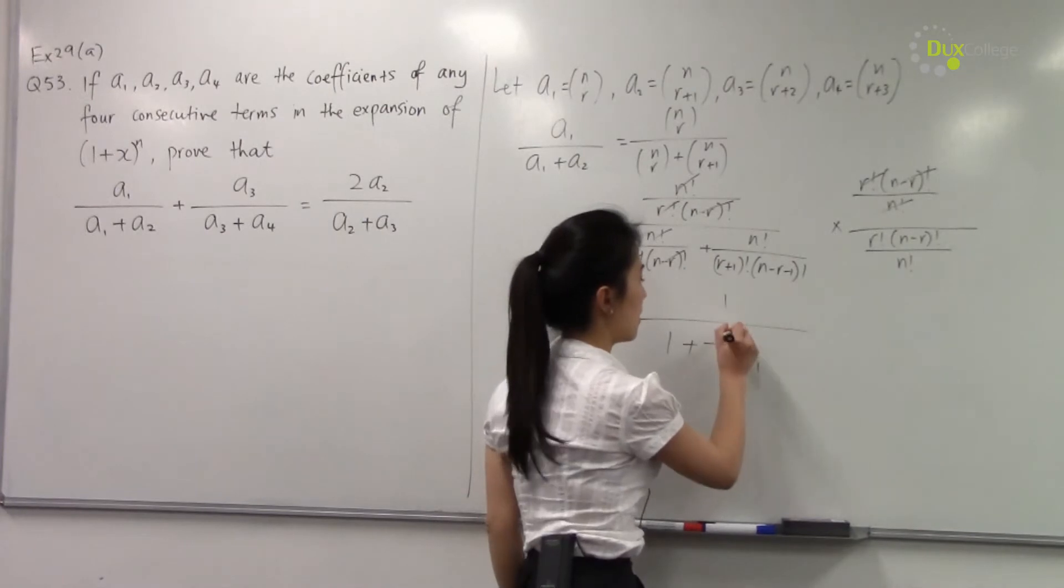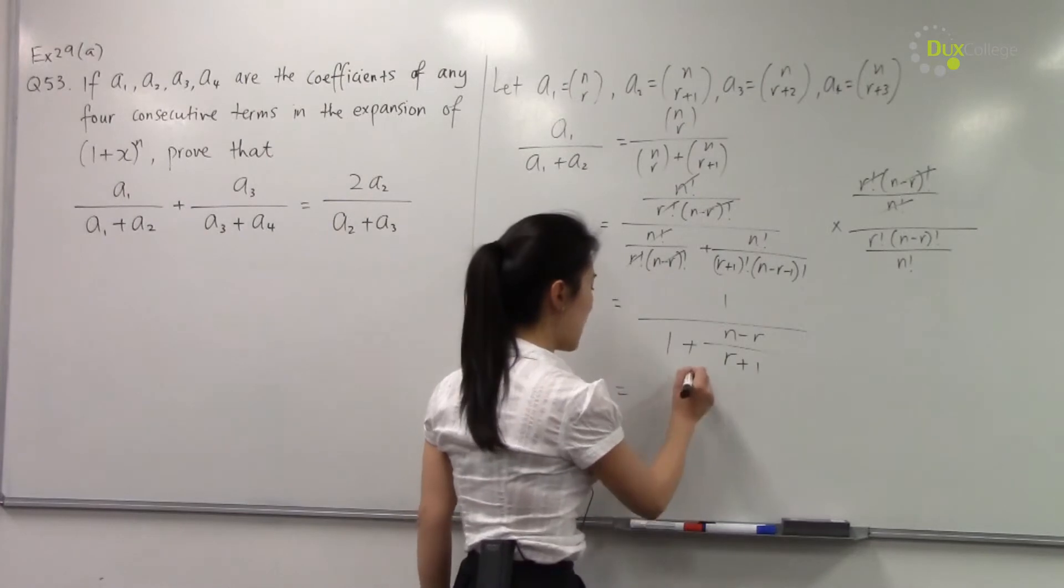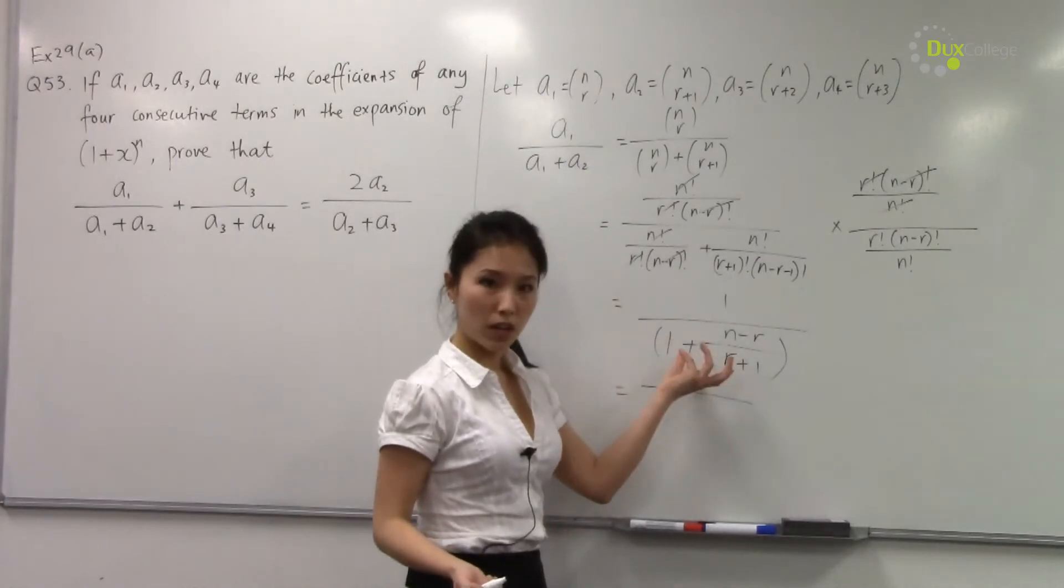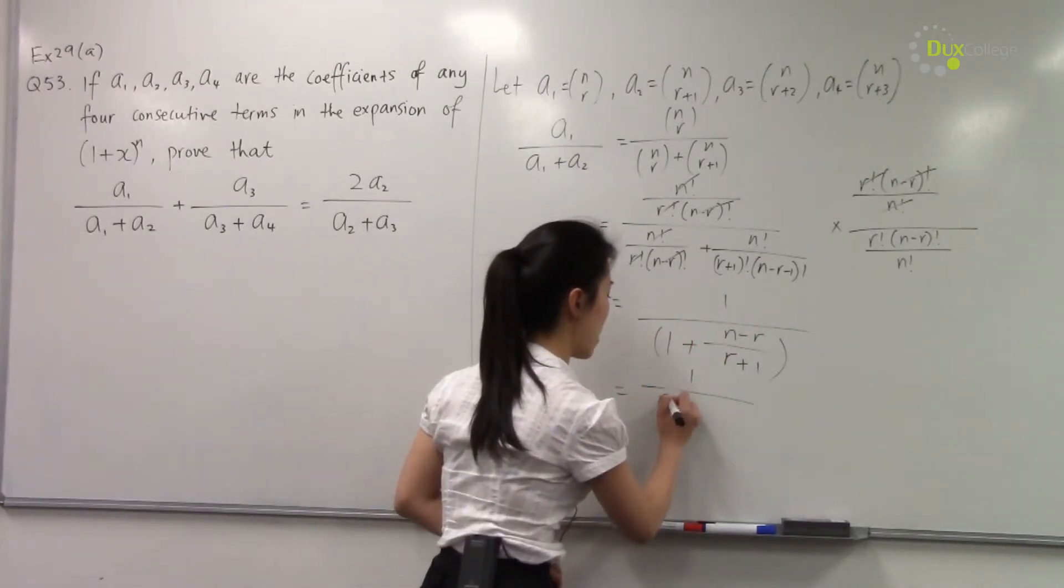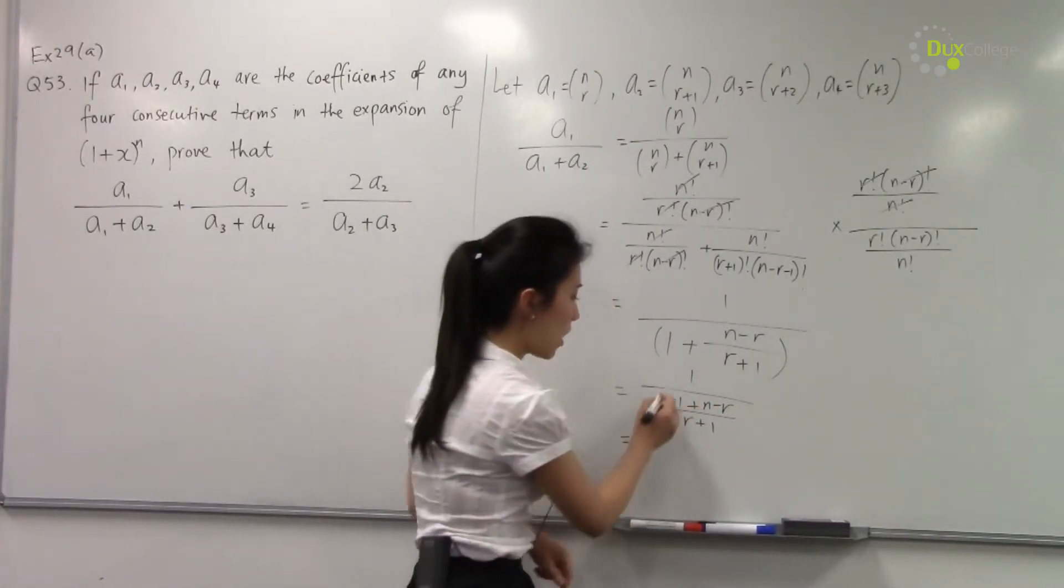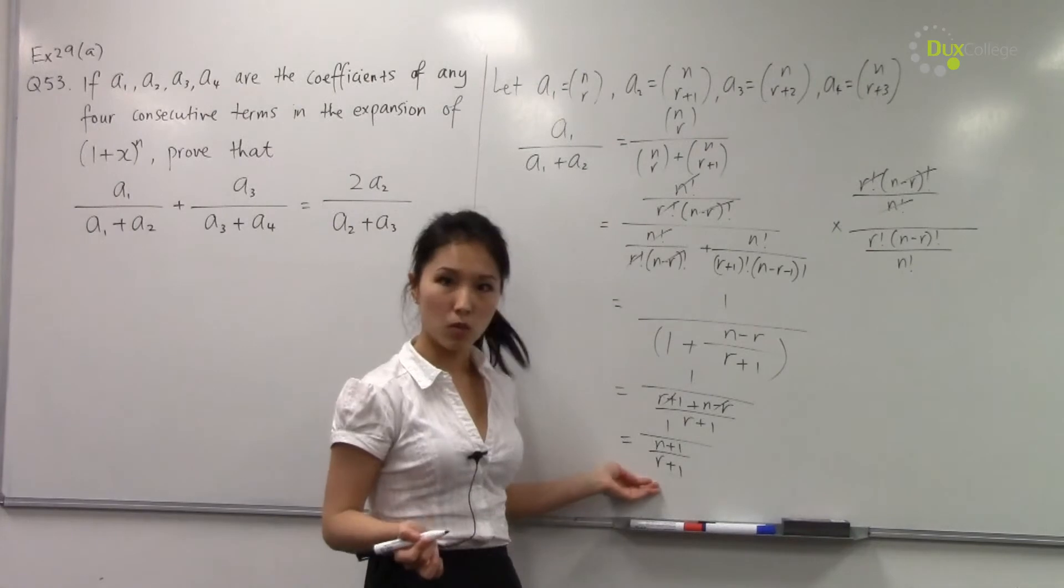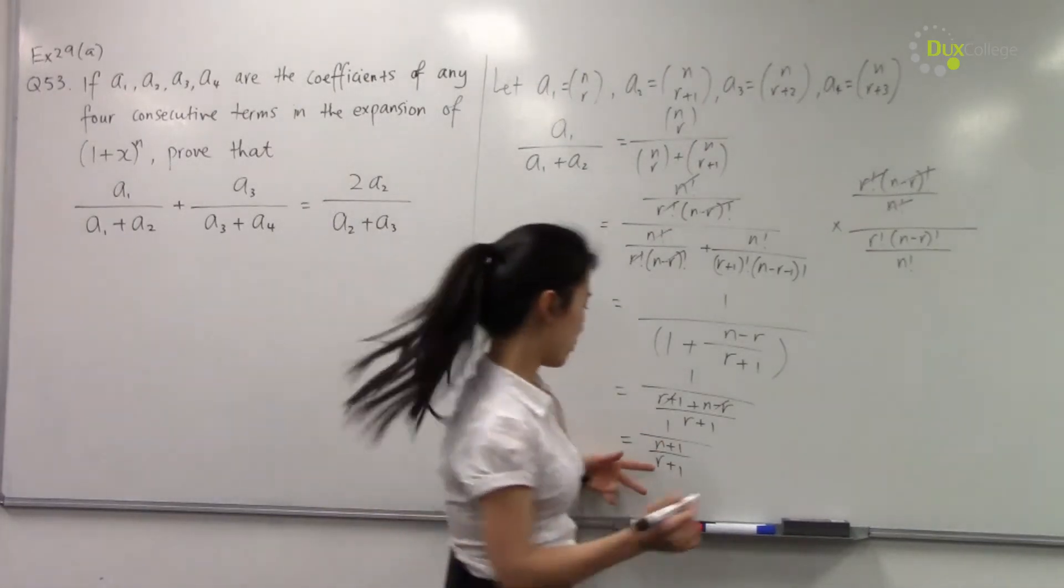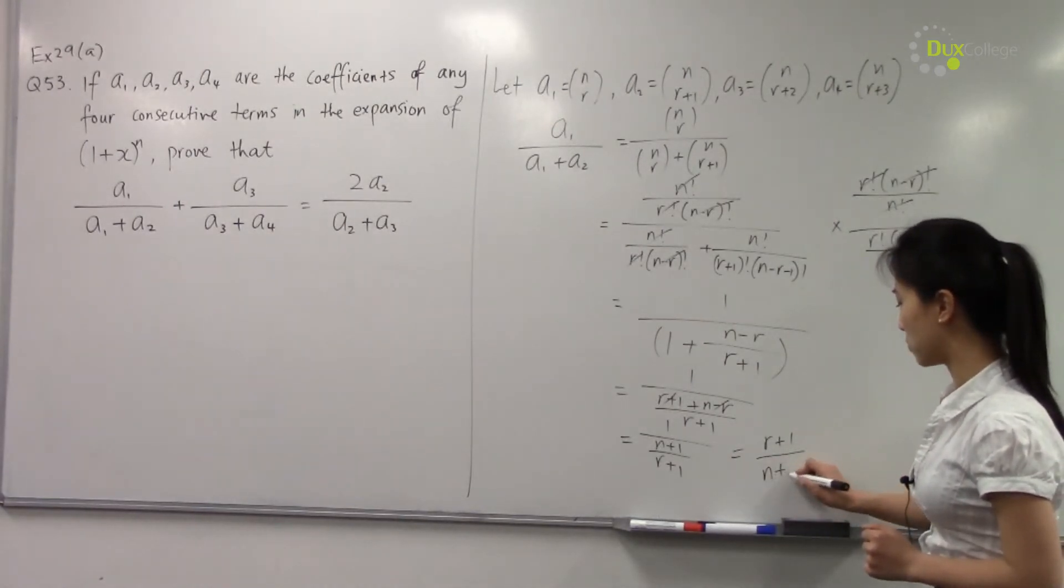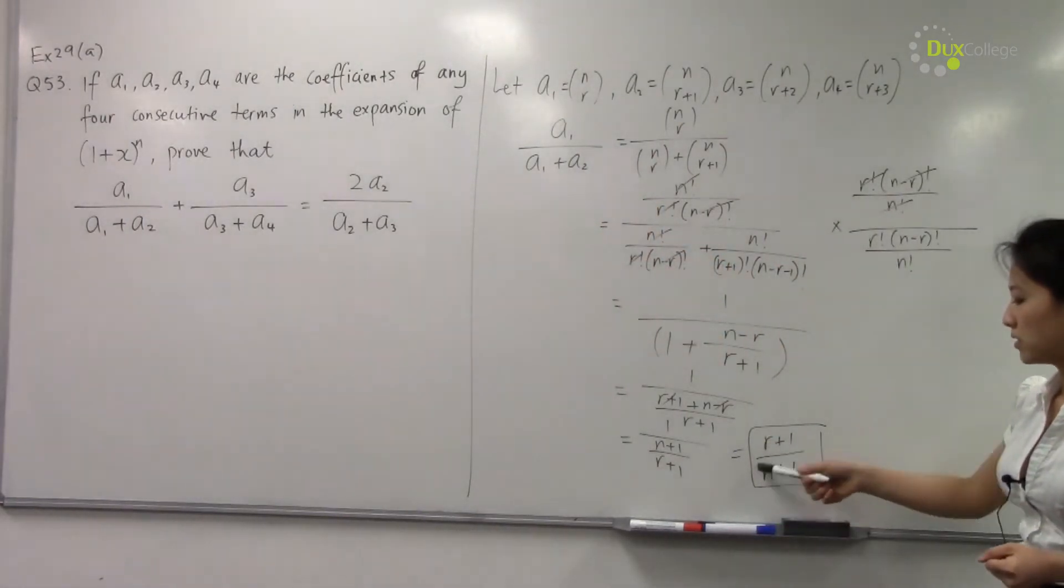So now the next step is to simplify this part. We can do so by putting this in the same fraction. So we have (r+1) plus (n-r) over r+1. As you can see, the r's cancel out. We have (n+1) over (r+1). And 1 over this fraction, we just need to take the reciprocal of this fraction. So therefore the final answer is (r+1) over (n+1).